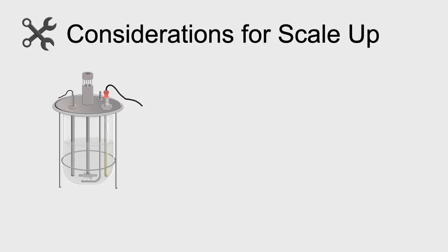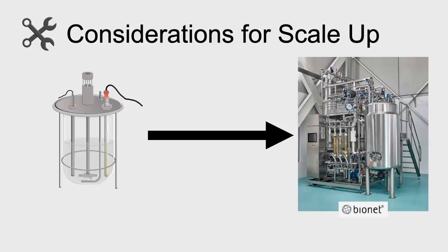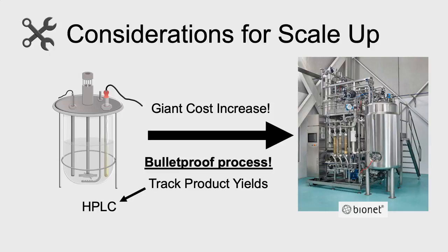What I wanted to do at the end of this video is think about considerations for scale-up. We showed a 500-milliliter fermenter. We want to scale that up to a much larger volume fermenter. We need to consider that there is a giant cost increase here, so our process needs to be bulletproof. We need to be able to track our product yields using chemistry, often HPLC, to know how much of our product we're producing per gram of sugar that we're putting in. We want to make sure that is efficient so that the cost of our media and the cost of our process is a small fraction of the value of the product that comes out.